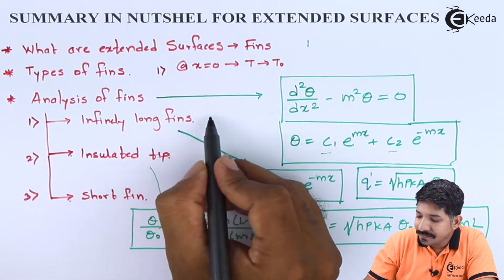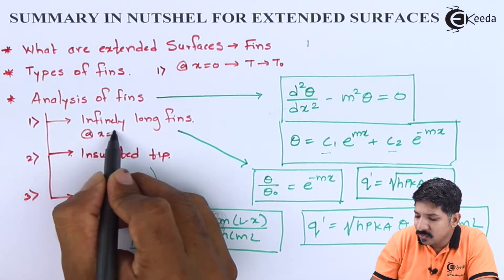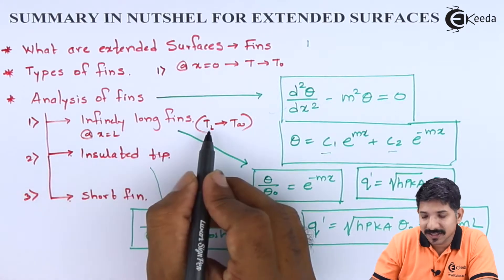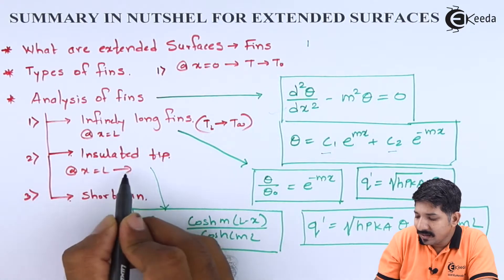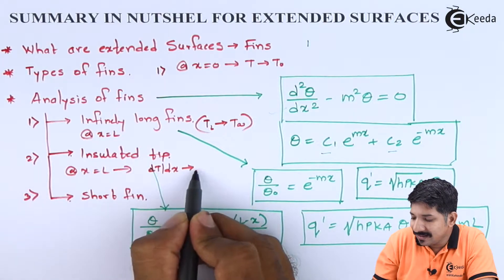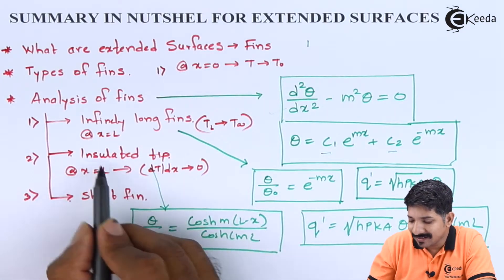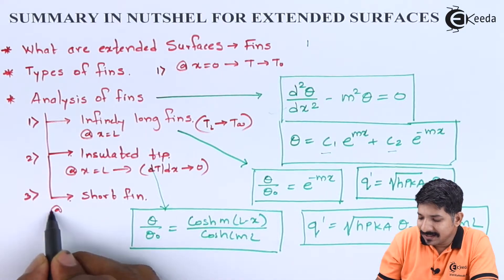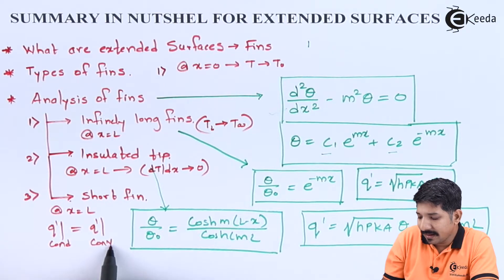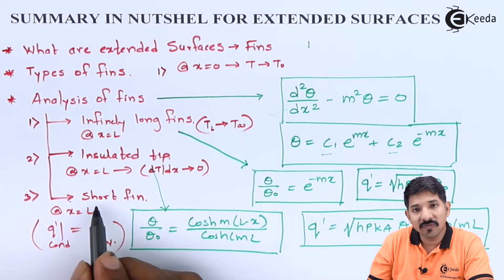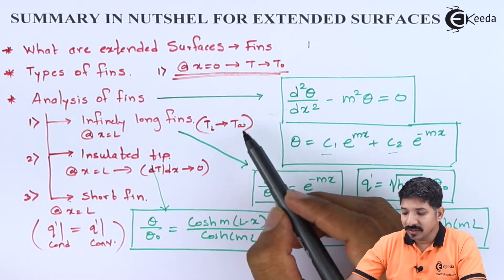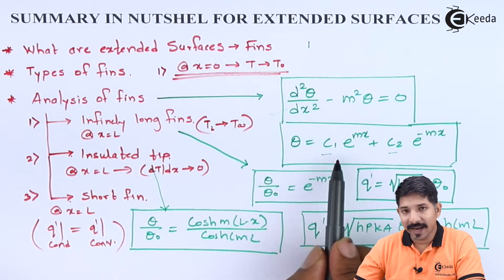For the infinitely long fin, the second boundary condition is that at x = L, T_L equals T_infinity. For the insulated tip fin, at x = L, dT/dx = 0. For the short fin, the boundary condition is that at x = L, heat flux by conduction equals heat flux by convection. Using these boundary conditions, we can solve for C₁ and C₂.